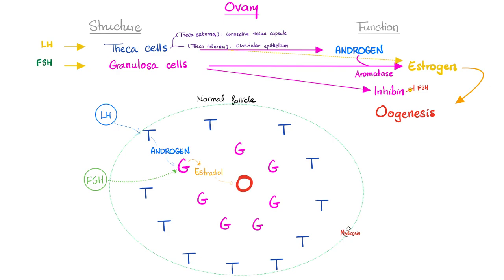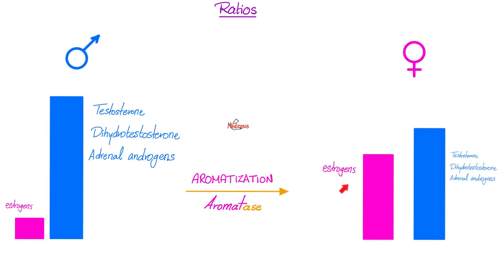Estrogen has many functions, including to stimulate oogenesis. Where do we get the estrogens from? From the male hormones, from the androgens, by a process of aromatization. The key enzyme is aromatase, the key gonadotropin stimulant is FSH, and where does that happen? In the granulosa cells.